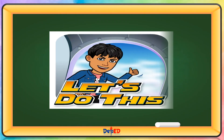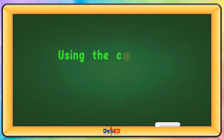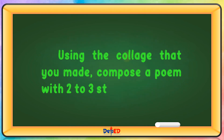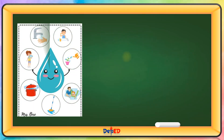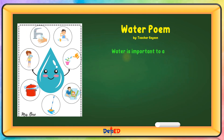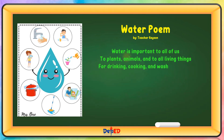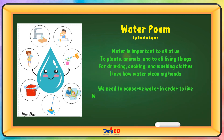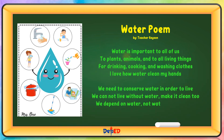Let's do this. Using the collage that you made, compose a poem with two to three stanzas. Water poem by the teacher: Water is important to all of us — to plants, animals, and to all living things. For drinking, cooking, and washing clothes, I love how water cleans my hands. We need to conserve water in order to live. We cannot live without water. Make it clean too. We depend on water, not water depend on us. Make it healthy and clean for all of us.